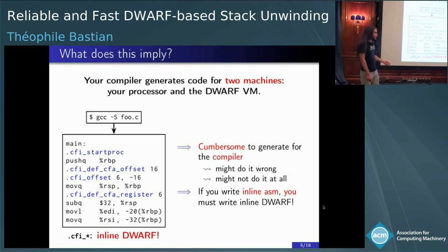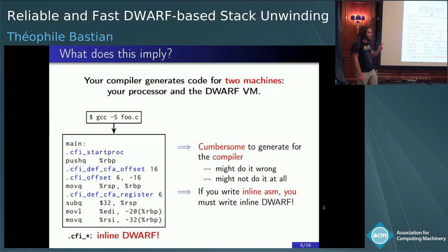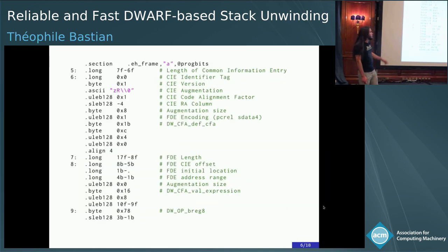And what's even not nice is that if you write inline assembly yourself — because you might want to do that if you program a system or whatever — you must write inline DWARF yourself. You might never have heard of DWARF, but you have to write this nevertheless. Otherwise your program will do weird stuff. And this is a real-life problem: in glibc, for instance, you have handwritten inline DWARF right in the middle of a file called low-level lock.